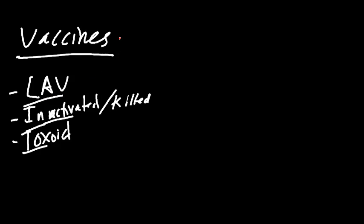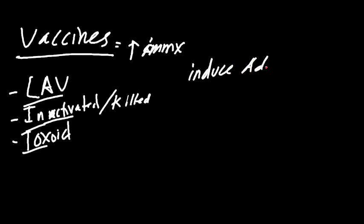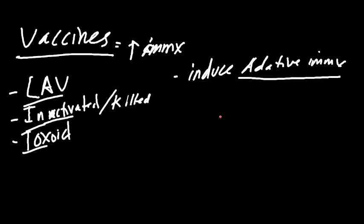What a vaccine in general is: it's trying to stimulate your immune system to protect it for future events. So we're trying to induce an adaptive immune response. There is a difference between adaptive immunity versus innate immunity. Your innate immunity is going to be there right away. Let's say you have a bacteria come in — you're going to have an innate immunity. Your neutrophils will come in and try to stop the infection.